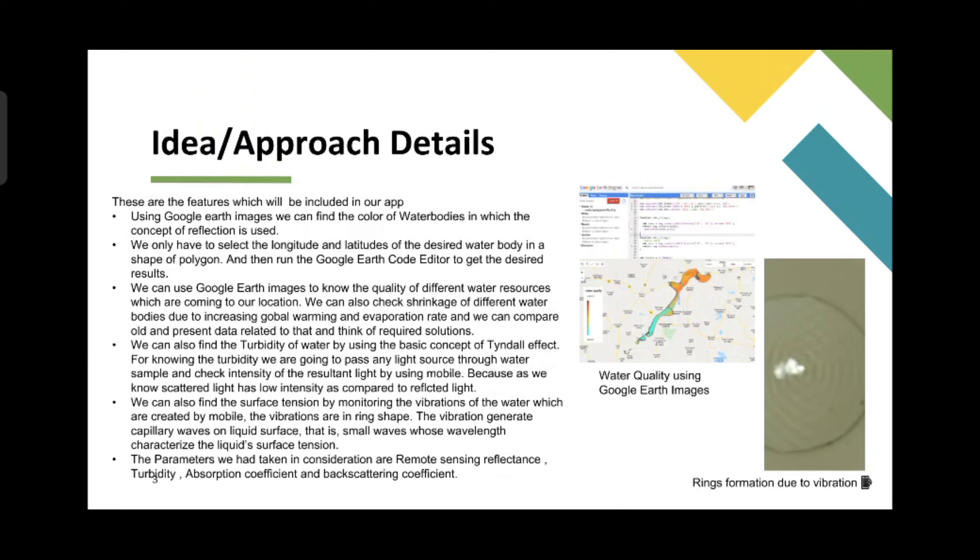We can also use it to find the turbidity of water by using the basic concepts of Tyndall effect. For knowing the turbidity we are going to pass any light source through a water sample and check intensity of the particular resultant light by using mobile, because as we know scattered light has low intensity as compared to reflected light.